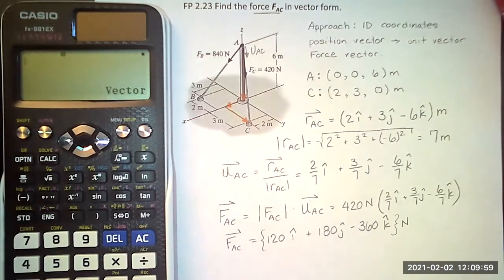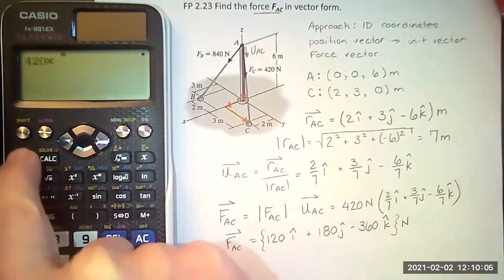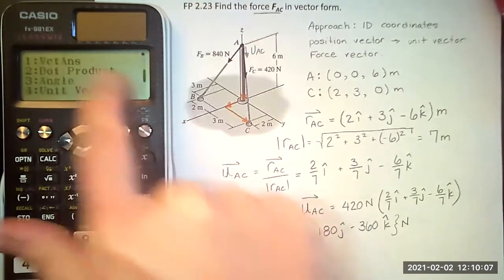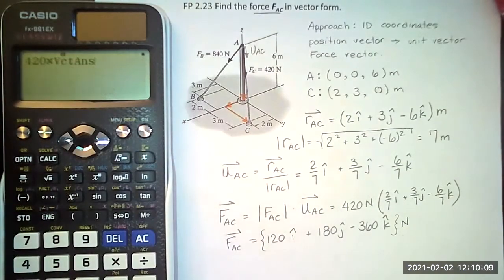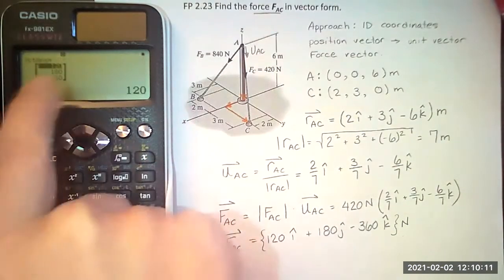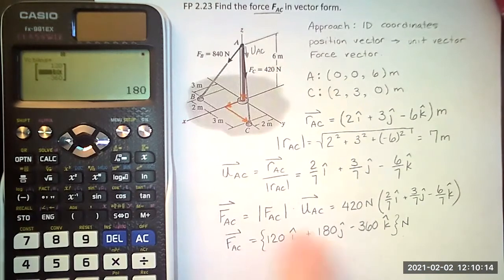So I'll clear. And now I'm looking for my magnitude of 420 times my vector answer, which is always stored in here. And I get 120 in the x direction, 180 in the y direction, and minus 360 in the z direction.